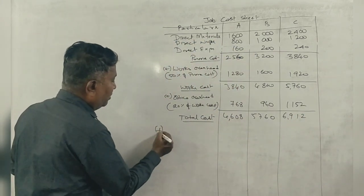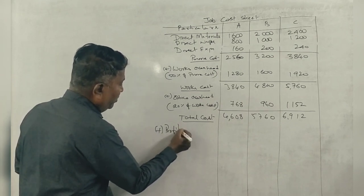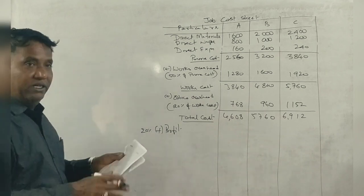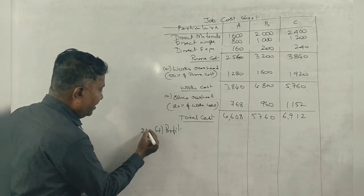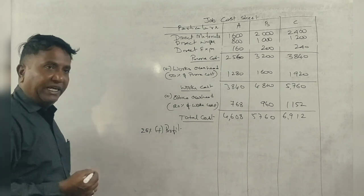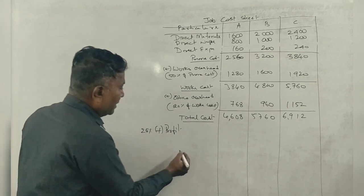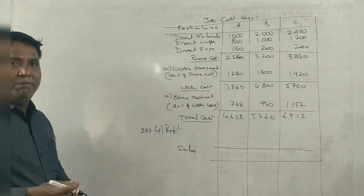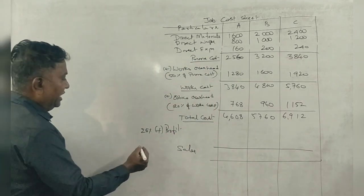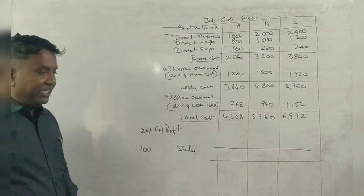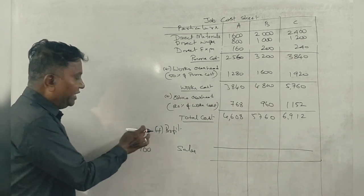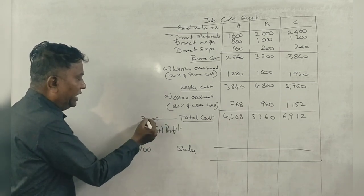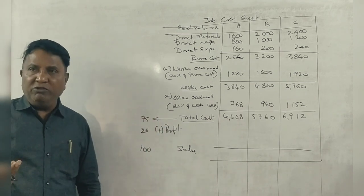While the profit is 25% of the selling price, we need to find the selling price. If sales is 100 rupees, and profit is 25%, then cost is 75 rupees. If cost is 75, selling price is 100.